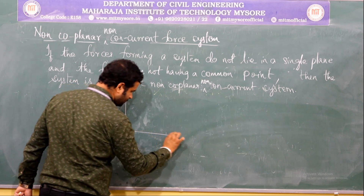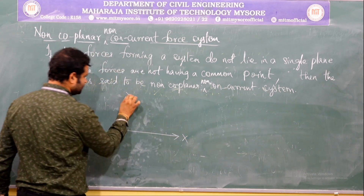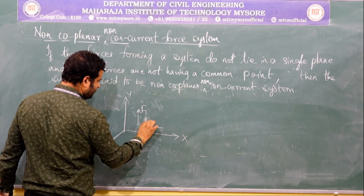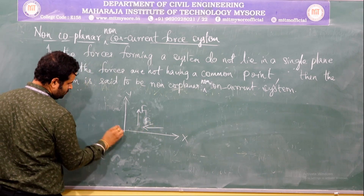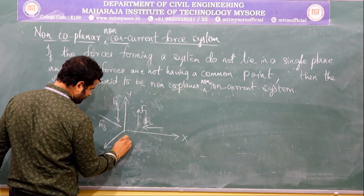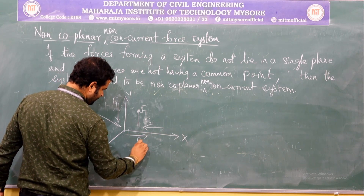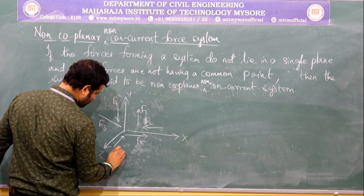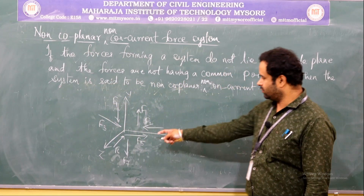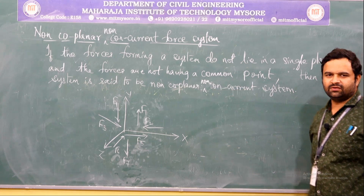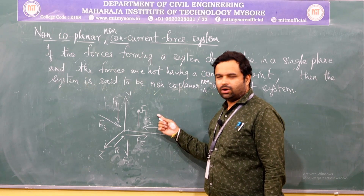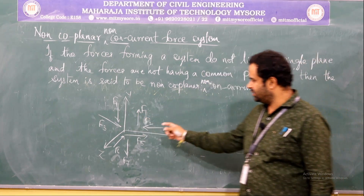If I write the diagram with axes X, Y, and Z, and forces F1, F2, F3, F4, F5, F6, F7 — this will be the best example to understand the non-coplanar non-concurrent force system, wherein the forces forming a system do not have a common point and these forces are in different planes.